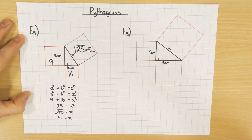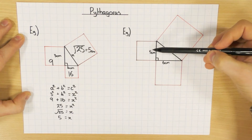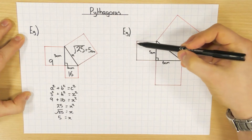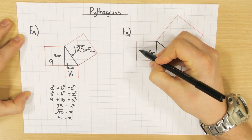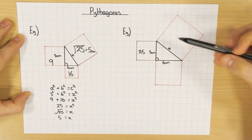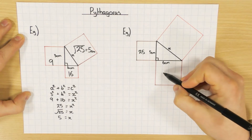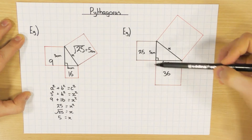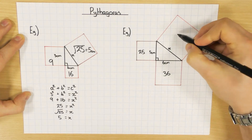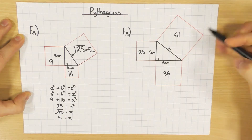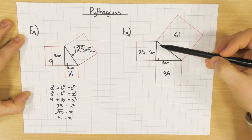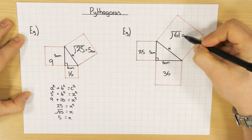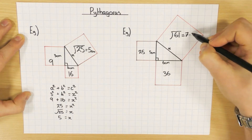Let's have a look at the next example — exactly the same thing. This length here is 5, this length here is 6. Let's work out the area of the squares: 5 times 5 is 25, and 6 times 6 is 36. When you add these together, 25 plus 36 gives you 61. The area of this big square is 61. But I want the length of this side, so I square root 61. You probably need a calculator for that, but you get the answer of 7.8, which has been rounded.